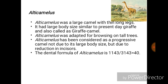Alticamelus was a large camel with thin, long legs. It had a body size similar to the giraffe and is also called the giraffe camel. It was adapted for browsing on tall trees, as seen by its long neck in the diagram. Alticamelus is considered a progressive camel not due to its large body size but due to the reduction in incisors. Its dental formula is: upper jaw — 1 incisor, 1 canine, 4 premolars, 3 molars; lower jaw — 3 incisors, 1 canine, 4 premolars, 3 molars. Total teeth: 40.